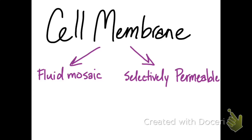There are two major things you should know about the cell membrane. One, it's called a fluid mosaic, and the other is that it's semi-permeable or selectively permeable.